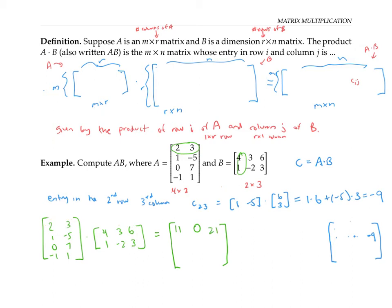Moving on to the second row: the second row times the first column gives one times four plus negative five times one, which is four minus five, or negative one. The second row times the second column is one times three plus negative five times negative two, giving three plus ten, or 13. The second row times the third column is one times six plus negative five times three, which is six minus 15, or negative nine — the same entry we calculated before.